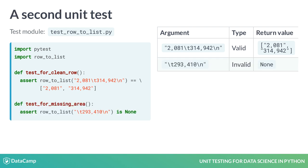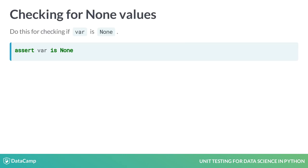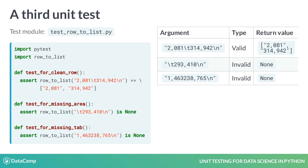For the second row in the table, we create a unit test called testOnMissingArea, because the argument has missing area data. Then we assert that the return value for this argument is None. Note that the correct way to check if a variable's value is None is to use the Boolean expression var is None, and not var equals equals None. For the third row in the table, we create a unit test called testForMissingTab, because the argument is missing the tab separating area and price. The assert statement is similar to the second test.